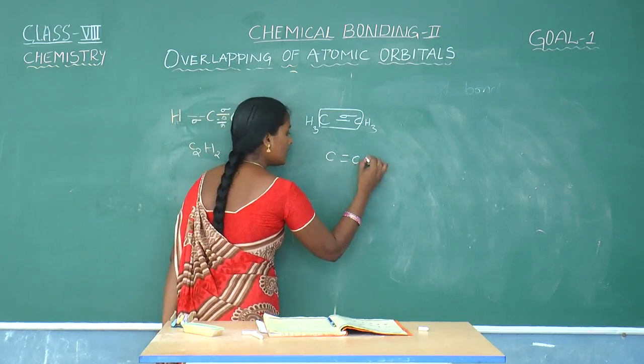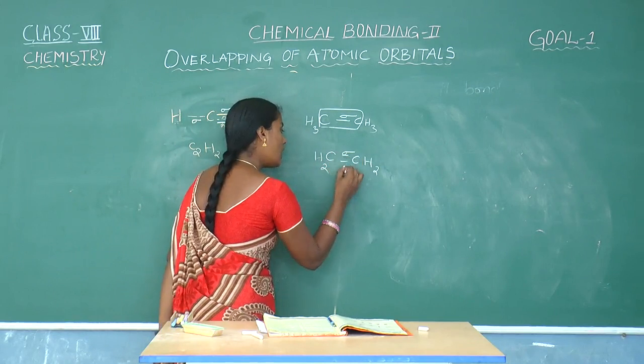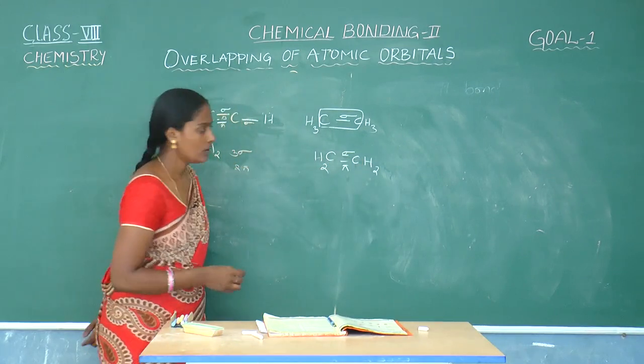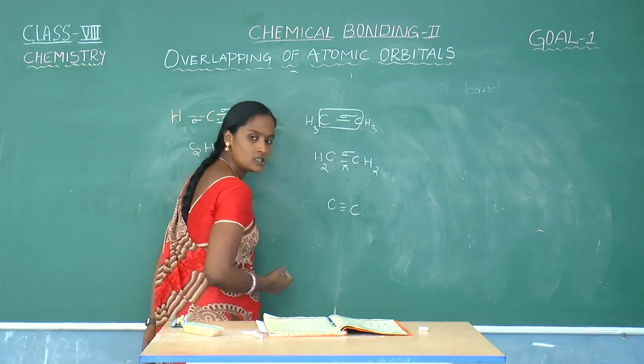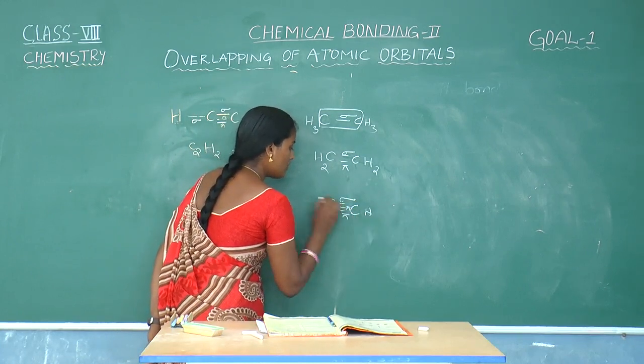Between carbon and carbon double bond, we can say there is one sigma and one pi bond. If you take triple bond, in this triple bond also, only one sigma and two pi bonds are there.